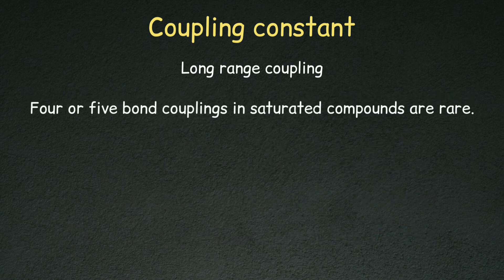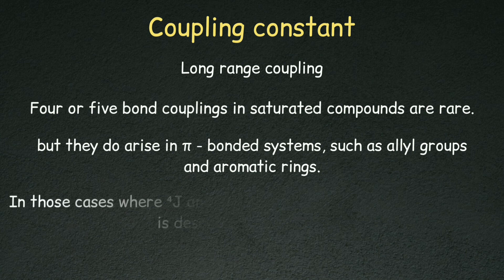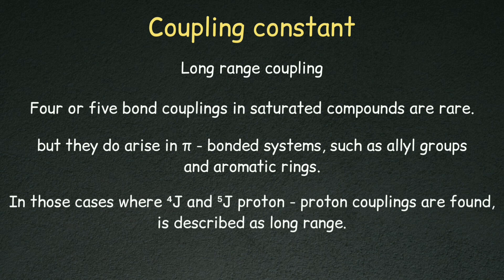Beyond 3 bonds, 4 or 5 bond coupling in saturated compounds is very rare. However, in pi-bonded systems such as allyl systems, double and triple bonds, and aromatic rings, J⁴ and J⁵ couplings — 4 to 5 bond couplings — do occur. These are referred to as long-range coupling.